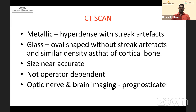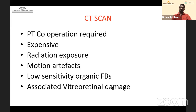Optic nerve and brain imaging along with eye and orbit helps prognosticate outcomes. Drawbacks of CT include requirement for patient cooperation, expense compared to X-ray and B-scan, radiation exposure, motion artifacts, low sensitivity for organic foreign bodies, and suboptimal delineation of associated internal damage. Most of these shortcomings are overcome with helical or spiral CT scans.